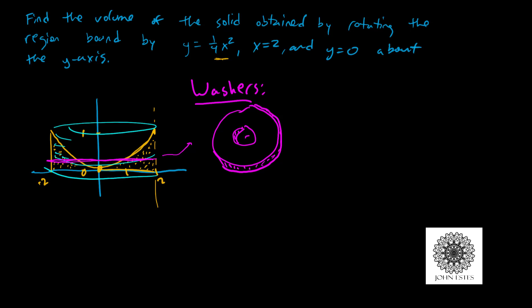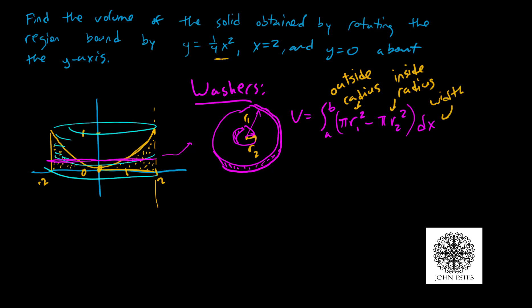To calculate the volume of each washer, we need an inside radius and an outside radius. The volume integral is pi times R1 squared minus pi times R2 squared — that's the area of the outside circle minus the area of the inside circle — times the width Delta X. You need to understand how to construct this yourself, not just memorize the formula, because changing the rotation axis or slicing direction changes the mechanics of the integral.